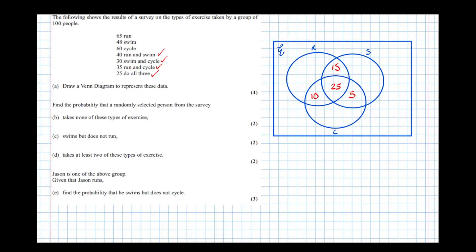Now for 60 cycle — all of those regions need to add up to 60. We've got 10, 25, and 5, so this remaining part must be 20. For 48 swim: 25 plus 15 is 40, add 5 is 45, so that remaining region must be 3. And for 65 run: 15 plus 25 is 40, plus 10 is 50, so that remaining region must be 15.